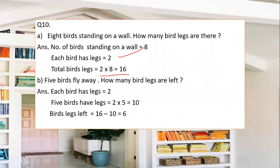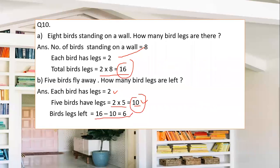Five birds fly away. How many bird legs are left? Each bird has 2 legs, so 5 birds have 2 × 5 = 10 legs. There were 16 total, and 10 have flown away. So 16 − 10 = 6 bird legs remaining.